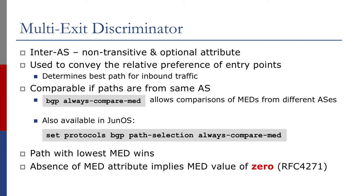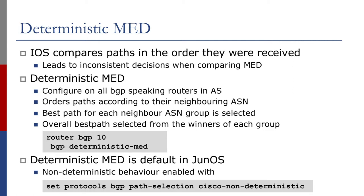One thing that has developed over time is how we compare MEDs. Cisco IOS compares paths in the order they were received, which can look as though you end up with inconsistent decisions being made. Most autonomous systems probably only have one or two connections between each other, but some big network operators may have dozens of connections. When doing balancing over these dozens of connections, the order that the paths were received becomes very important. Most recent BGP implementations have a specific way of ordering these paths before calculating the MED.